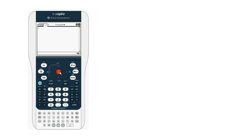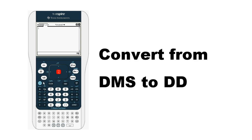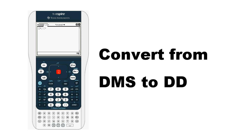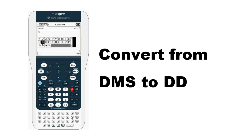After returning to a calculator screen, access the Templates button to the right of the 9. Once in that menu, you should see a template that allows you to fill in degrees, minutes, and seconds. Here, 30 degrees and 30 minutes is converted to decimal degrees. You will need to press CTRL before ENTER unless you want your answer as an improper fraction. It's no more difficult to add seconds to the conversion — just fill in that part of the template and press CTRL+ENTER.